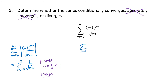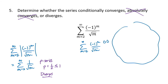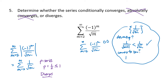Going back to the original series: it has an alternating sign, so many tests like comparison, limit comparison, and the integral test don't apply. We try the alternating series test instead. We consider the sequence 1 over the square root of m. Is it decreasing? Yes, because 1 over the square root of m plus 1 is smaller — it has a larger denominator. Does it converge to zero? Yes, the limit as m goes to infinity of 1 over the square root of m is zero. So this series converges by the alternating series test.